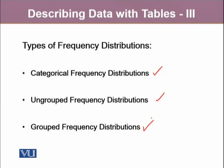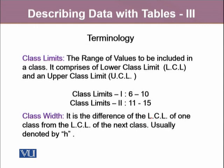Grouped frequency distributions are constructed for larger data sets. There are a few terminologies used here. The very first is class limits. Class limits are the ranges of values that are to be included in each class, comprising a lower class limit and an upper class limit.